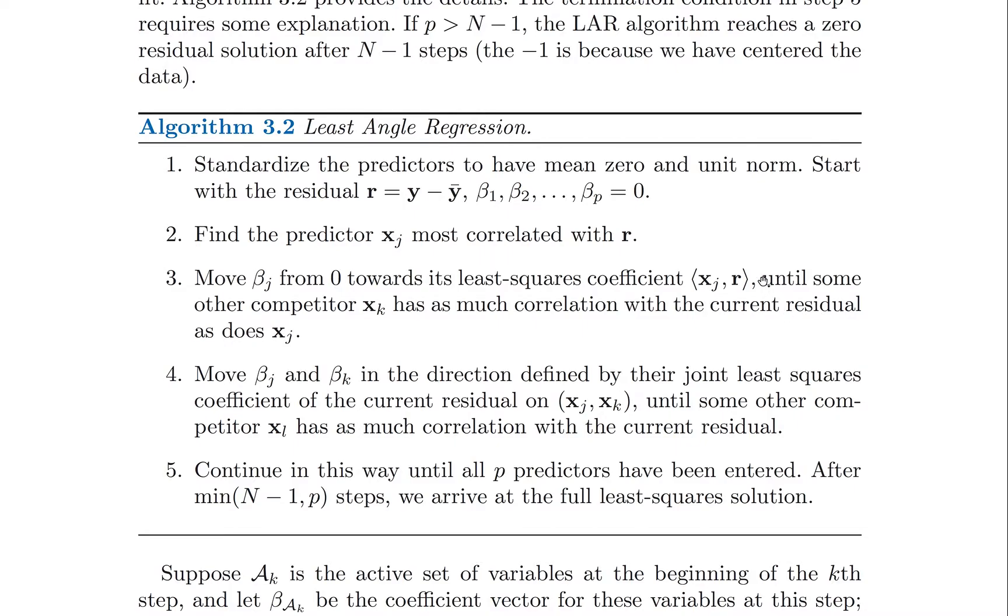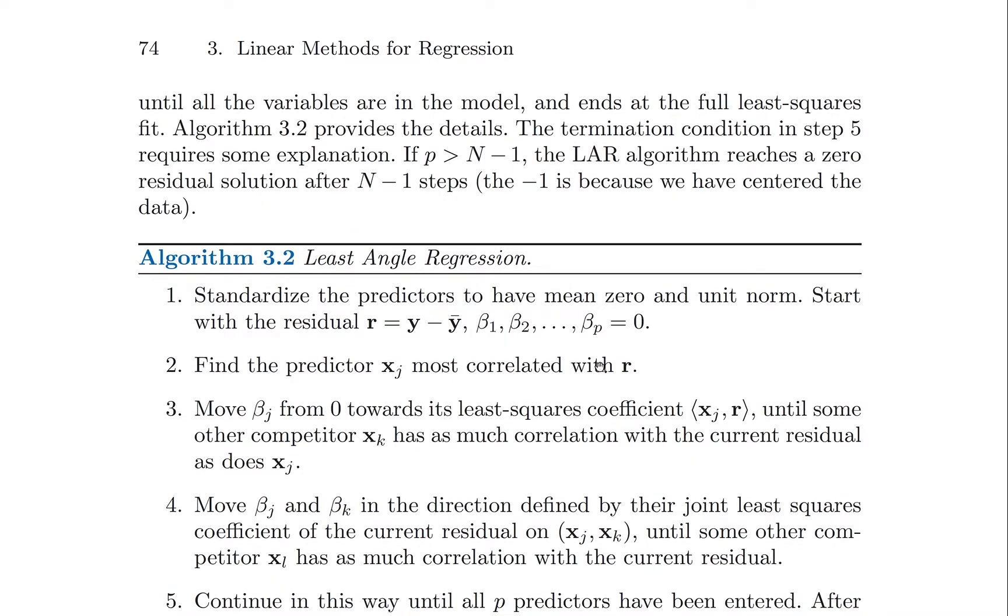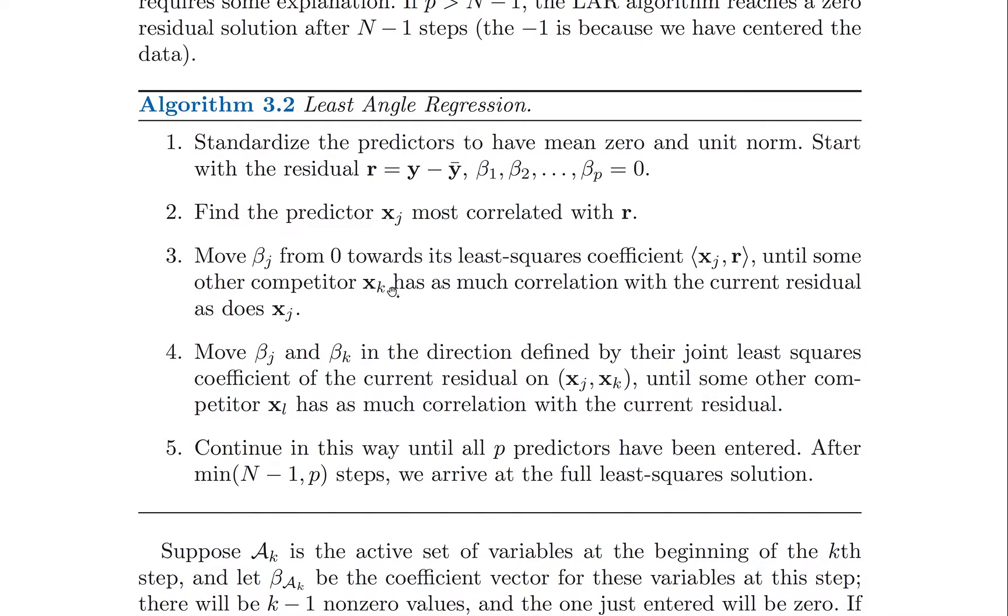In LARS what we do is we only use that variable until some other variable becomes just as good. So while initially we're moving only in the xj direction, only in the beta j or mj direction in our model, in our space of models, once another competitive variable becomes just as important, we're actually going to stop for a moment.